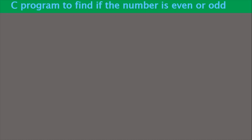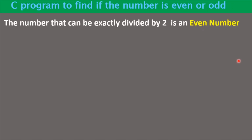Dear learners, let us develop a C program to find if a number is even or odd. Before doing the coding part, let us first discuss the logic. As far as the definition of an even number goes, the number that can be exactly divided by two is called an even number. Exactly divisible means that when a number is divided by two and produces zero as the remainder, that number is an even number.